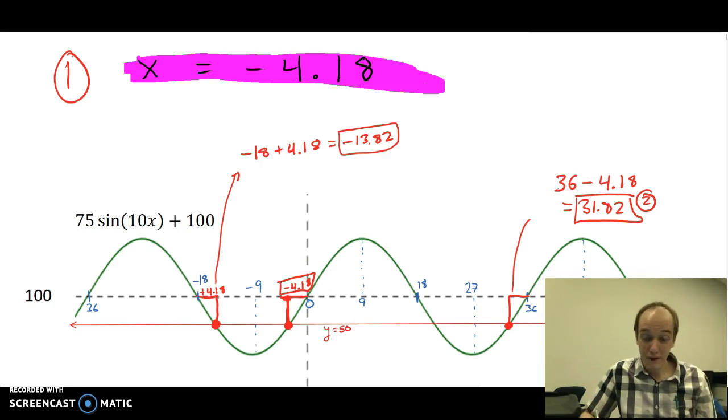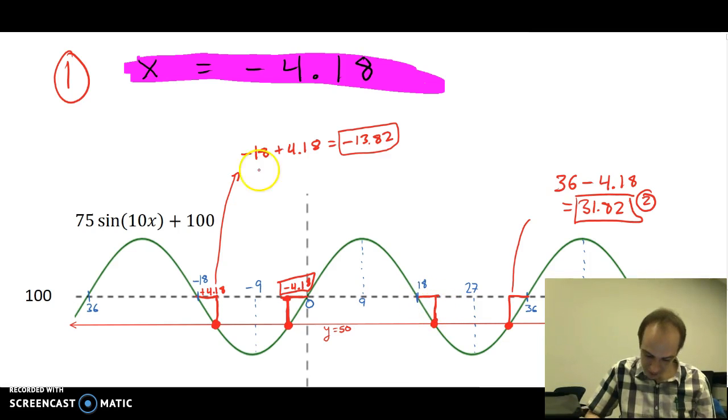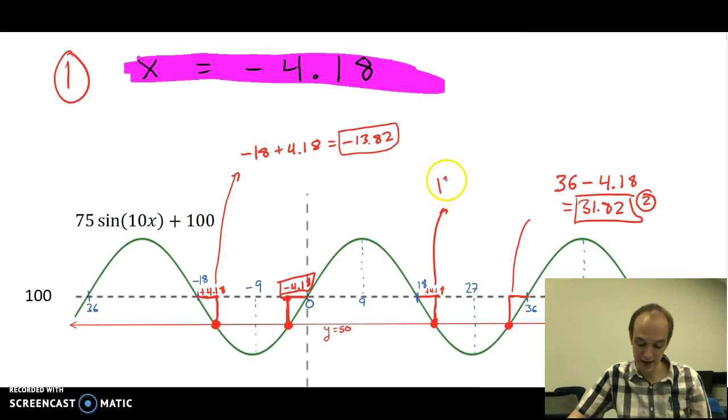And then finally, we're going to find the fourth solution point right here. We're going to use the same process as we did with the negative 18. We're going to add 4.18. But we're going to add it to 18. So this solution point will be found by doing 18 plus 4.18, which equals 22.18.